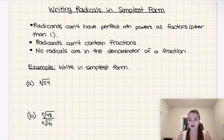So how do we know whether or not a radical is in simplest form? Well, if a radical is in simplest form, that means the radicands, which is the number in the radical sign, can't have perfect nth powers as factors other than one. So what we mean by that, for example, is if we're taking the square root of something, then if it's in simplest form, there isn't going to be any factor of that number that is a perfect square other than one.